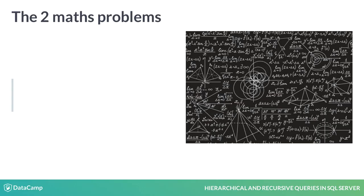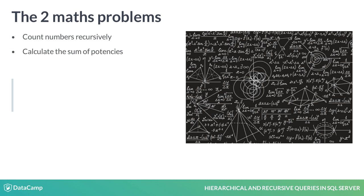These two mathematical problems are the following. Firstly, we simply count numbers from 1 to the defined termination condition. The second problem is to calculate the sum of potences. For each problem, the recursive definition is provided and explained. Each problem is defined by an initialization step and the recursive step.